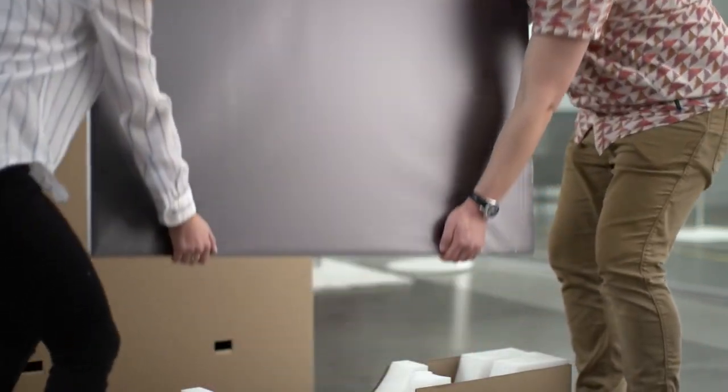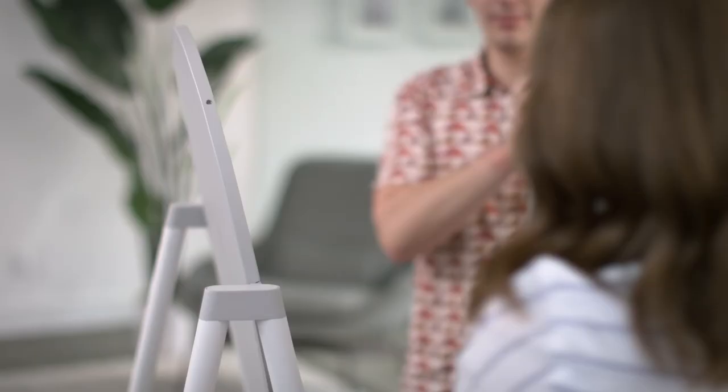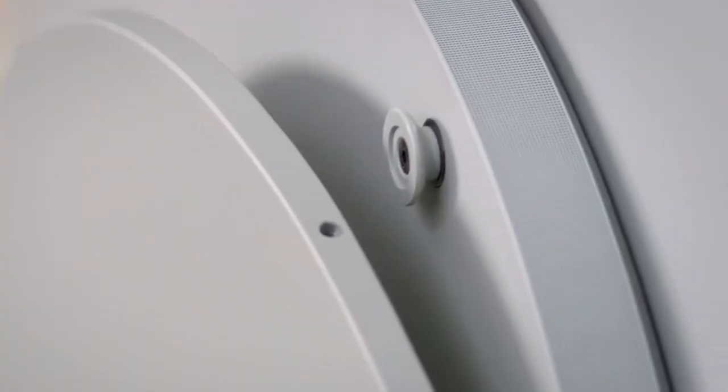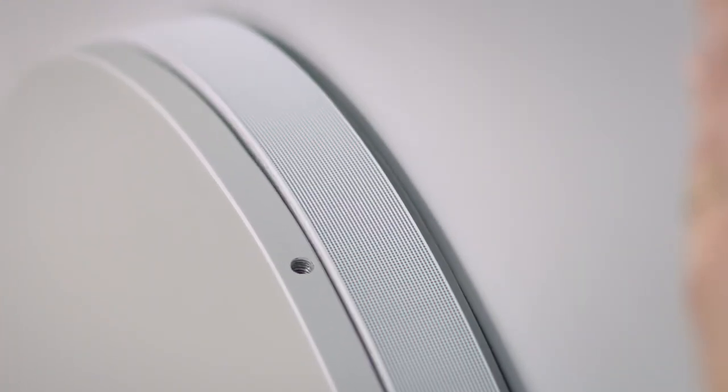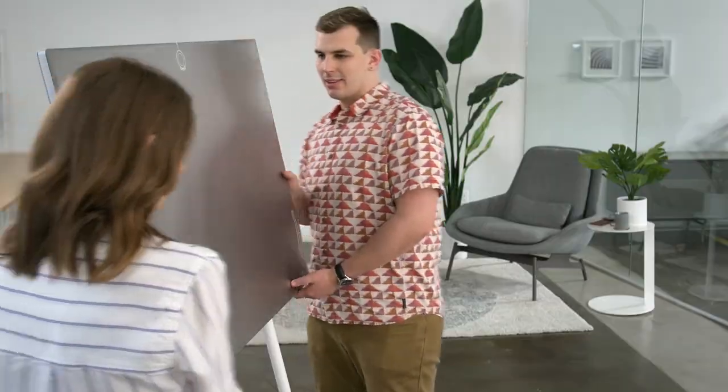With the help of your colleague, lift the Surface Hub from its box, supporting it with both hands. Align the hardware mounts with the slots on the mounting plate until it sits firmly in place.